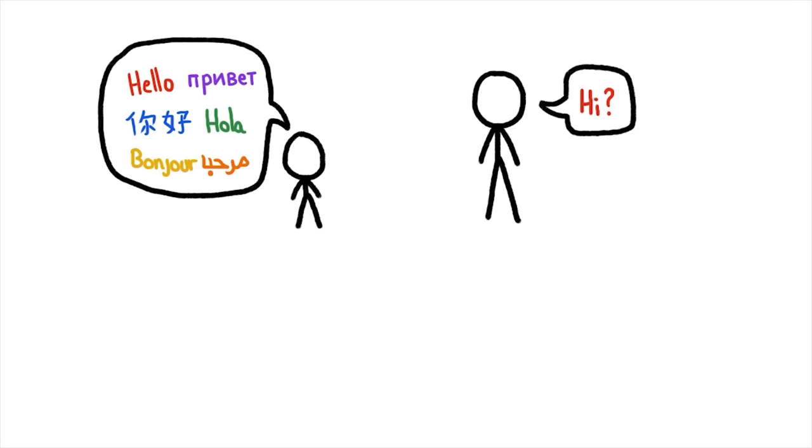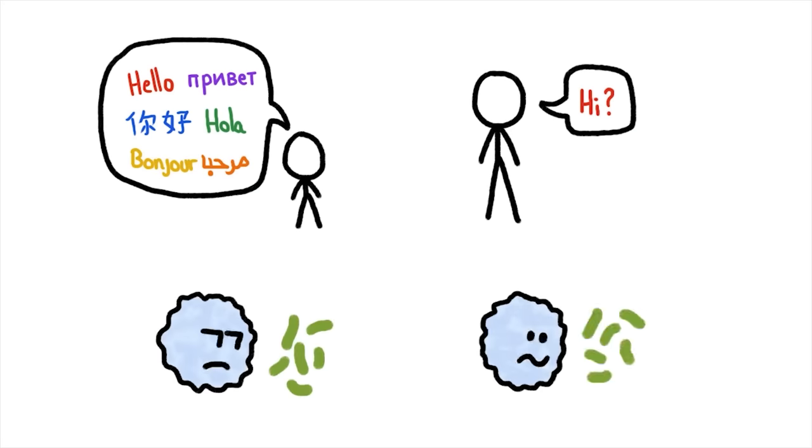Kind of like how we're better at learning foreign languages when we're younger, our immune systems are best at learning to distinguish harmless foreign substances from harmful ones when exposed to them very early in life.